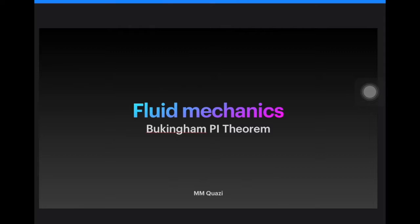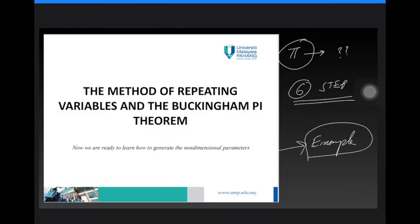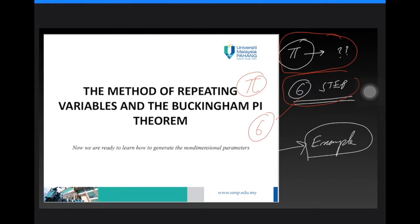We are going to move to our next and last part of chapter five, which is the Buckingham Pi theorem or the method of repeating variables. In this theorem we are going to learn how to determine the non-dimensional parameter pi. It is best to learn it through examples, so we are going to go through an example to learn how to generate this non-dimensional parameter.